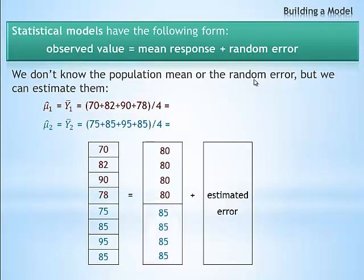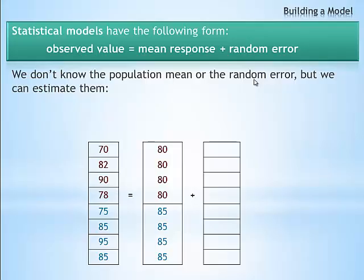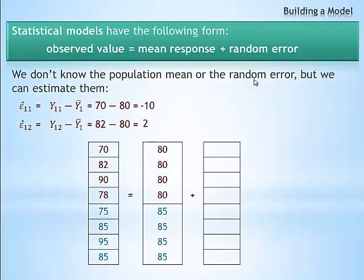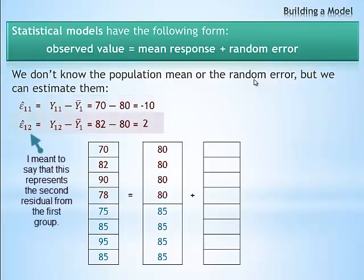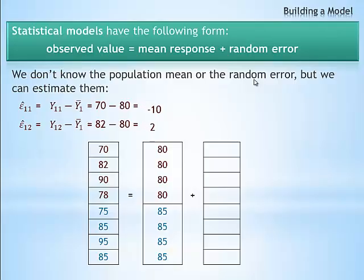The last part of our model is the residuals, or the estimated error terms. We often use the Greek letter epsilon to represent these error terms. Residuals are simply the observed values minus the expected mean values. Using the same subscript notation, the first residual from the first group is simply y11 minus the mean of the first group. The residual from the second group is simply y12, or 82 in this case, minus the mean of the first group, giving us a value of 2.